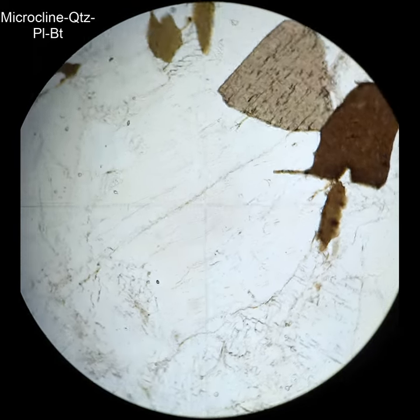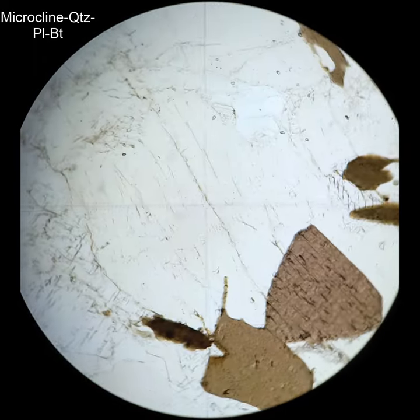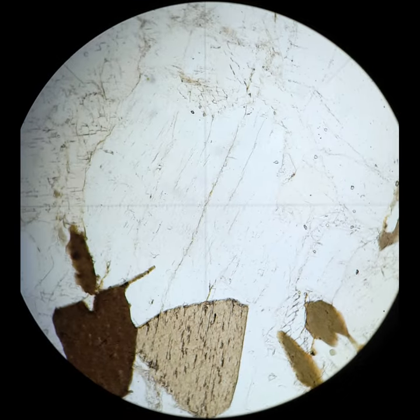K-feldspar can be a little tricky to identify in thin section, but there's one variety, microcline, that is quite distinctive and it's usually not that bad.